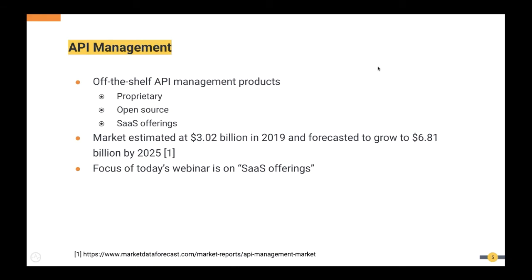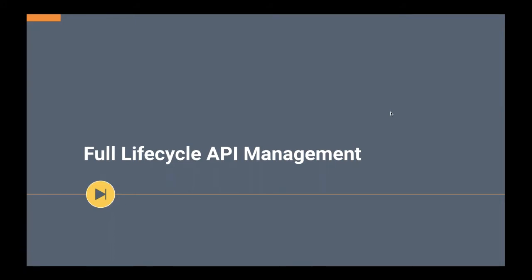When an organization decides they want an API management solution, they have to decide whether to deploy a product in their own data center, go to the cloud, or consume a SaaS offering. I'm not going to help with that decision today — that's a separate topic. Today the focus is: if you have already decided to go with a SaaS offering, I am going to help you make the right choice. I've selected some key points to consider when selecting an API management SaaS offering.